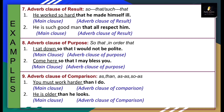Seventh type: adverb clause of result. It is denoted by subordinators: so...that, such...that. An adjective or adverb is used in between to show intensity. Example: 'He worked so hard that he made himself ill.' The result of working so hard is that he made himself ill. 'That he made himself ill' is your adverb clause of result. Another example: 'He is such a good man that all respect him.' 'That all respect him' is your adverb clause of result.